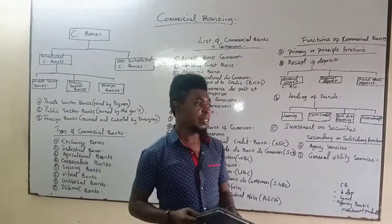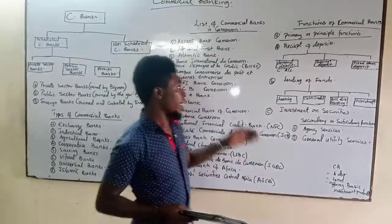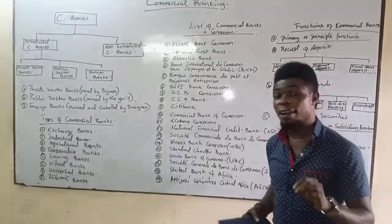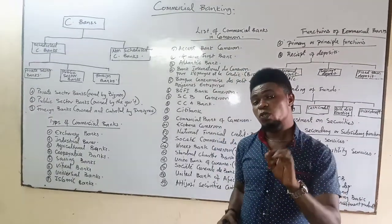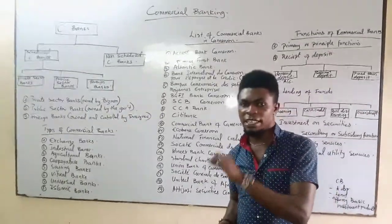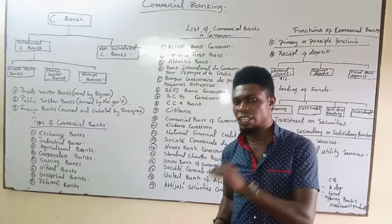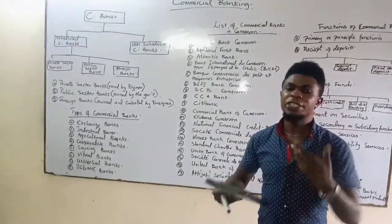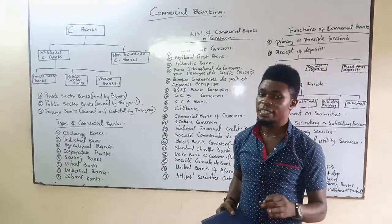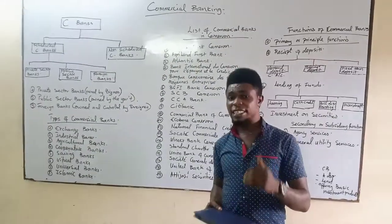We said the banking system is one of two principal types. We saw the central banking system and we are going to discuss the commercial banking system. The central bank of every nation is the national bank of that nation, offering financial services to the government as well as other banks and financial institutions within that nation. It implements monetary and economic policies and also issues currencies of different denominations. That is what we discussed on central bank.